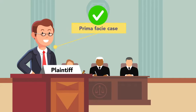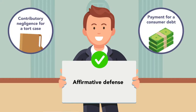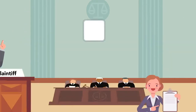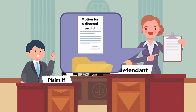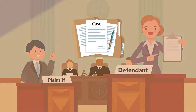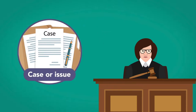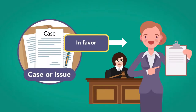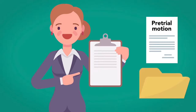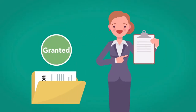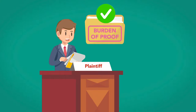If the plaintiff has successfully proven its prima facie case, the defendant must rebut it to prove an affirmative defense, such as contributory negligence for a tort case, payment for a consumer debt, or lack of consideration in a contract dispute. After the plaintiff has completed its case, the defendant can move, orally or in writing, for a directed verdict. A motion for a directed verdict can also be made during or after the defendant's case, or at any time until the case goes to the jury. A motion for a directed verdict asks the judge to find that the other party did not meet its burden of proof, and so the case or issue should be decided in favor of the moving party as a matter of law. The motion must be specific as to both the law and the facts of the case, and is roughly equivalent in effect to a pretrial motion for summary judgment. If the motion is granted, the moving party will win the case or the issue; if not, and the judge rules that the plaintiff has met its burden of proof, the trial moves on to the next stages.